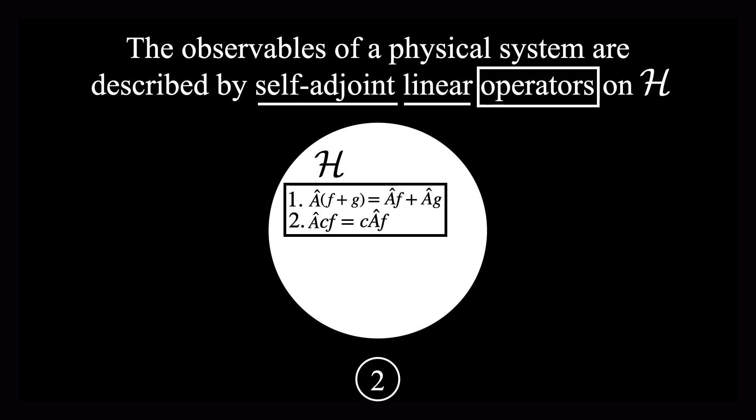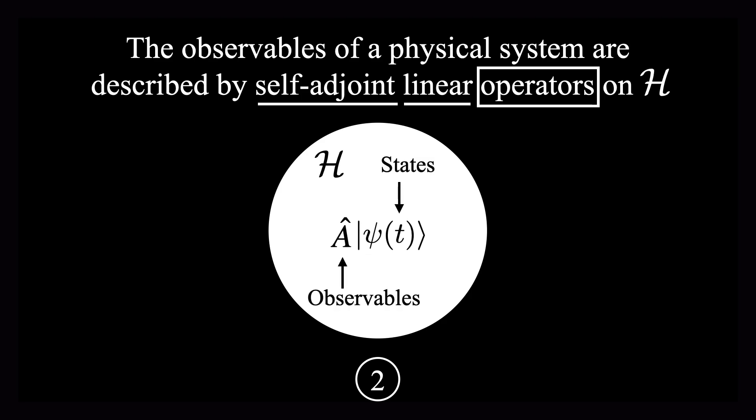Now, what it means for an operator to be self-adjoint is that A dagger actually equals A. So in the context of quantum mechanics, only those specific operators that have this quality of being self-adjoint have the potential to be used to describe the observables of a physical system. And the functions that these operators will act on will be the vectors of the Hilbert space, which we know by the first axiom describe the states of a physical system. So why do we need all this talk about self-adjointness? This will become clear with the next axiom.